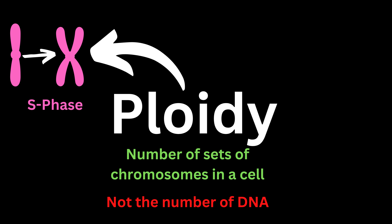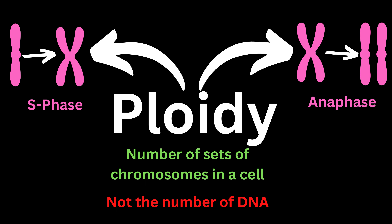But when we come to anaphase, we decided to move our replicated file — the replicated DNA — into another folder by splitting the centromeres apart and making those two strands of DNA into two chromosomes. Hence in this stage, the number of chromosomes will double. If we were talking about a diploid cell, in the anaphase stage we have a tetraploid cell.